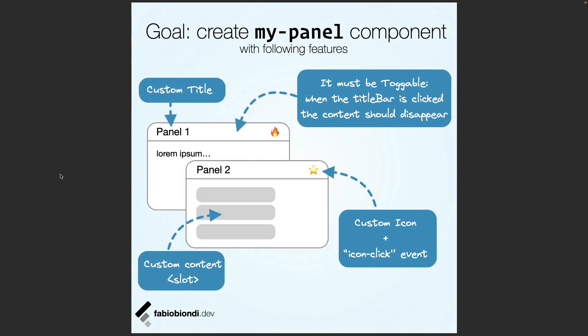Our goal is the creation of a reusable component, such as a simple panel, and publish it on NPM in order to use it in React, Angular, vanilla JavaScript, or in any other framework. When we use the panel, we should be able to customize the title, and the header should be toggleable, so we can collapse the panel by clicking on the header.